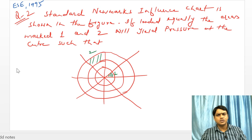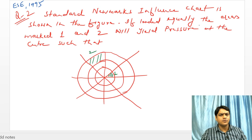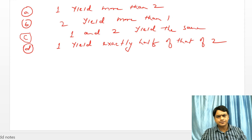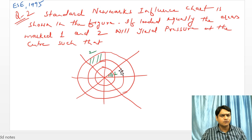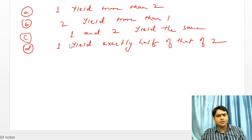Another problem: In the standard Newmark influence chart, if loaded equally, the areas marked 1 and 2 will yield pressure at the center such that — (A) 1 yields more than 2, (B) 2 yields more than 1, (C) 1 and 2 yield the same, (D) 1 yields exactly half of 2. Since each area unit in the Newmark chart produces equal vertical stress, portions 1 and 2 yield the same pressure. Option C is correct.